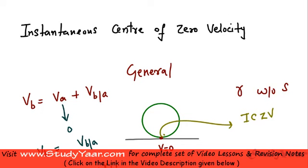If you know your instantaneous center of zero velocity, then it is very easy to find out different velocities of different points.